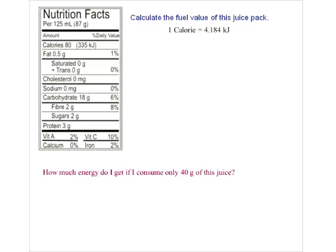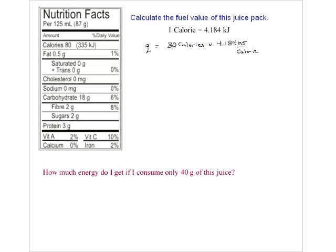In this question, drinking the entire juice pack gives 80 calories. To find the energy in kilojoules, we multiply: 80 calories × 4.184 kJ/calorie = 335 kilojoules. We can now relate this - to boil one mole of water (about 18 mL) takes 40 kilojoules of energy.